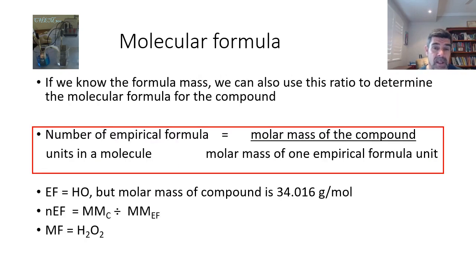The key is this. If we know the formula mass, we can work out the molecular formula as well as the empirical formula. So in the previous example, the CO2 may just give us the simplest ratio of carbon to oxygen. We would actually need the molar mass in order for us to know exactly whether or not the compound was CO2 in terms of its molecular formula. So there's a little bit of a complicated equation here. The number of empirical formula units in a molecule is just the molar mass of the compound divided by the molar mass of one empirical formula unit.